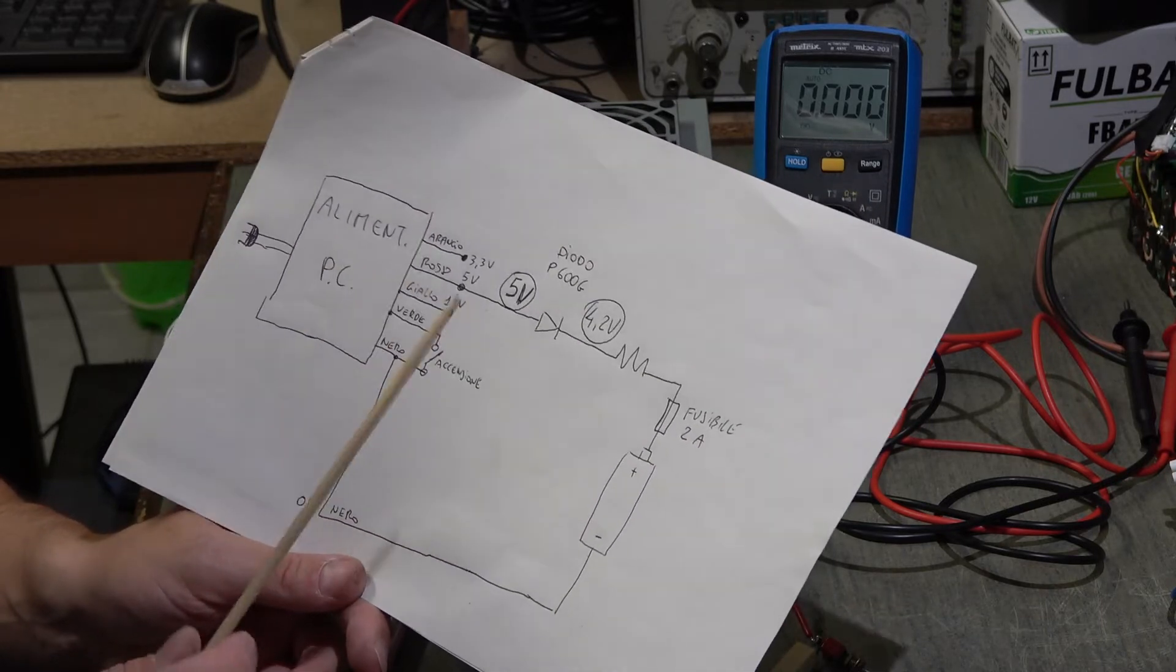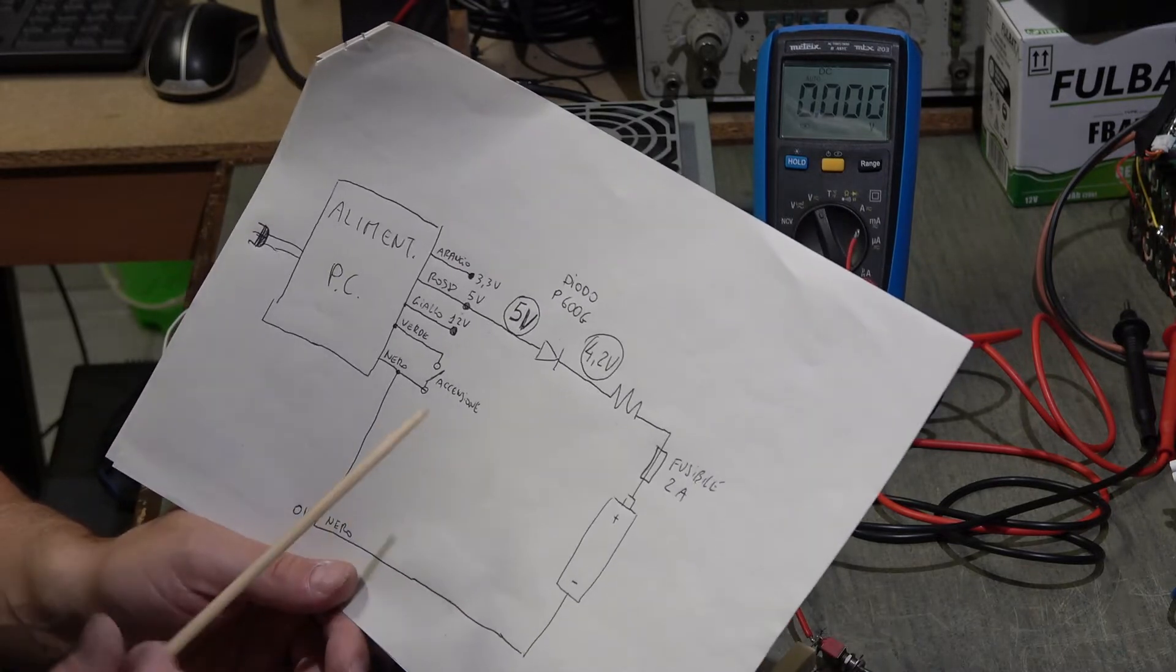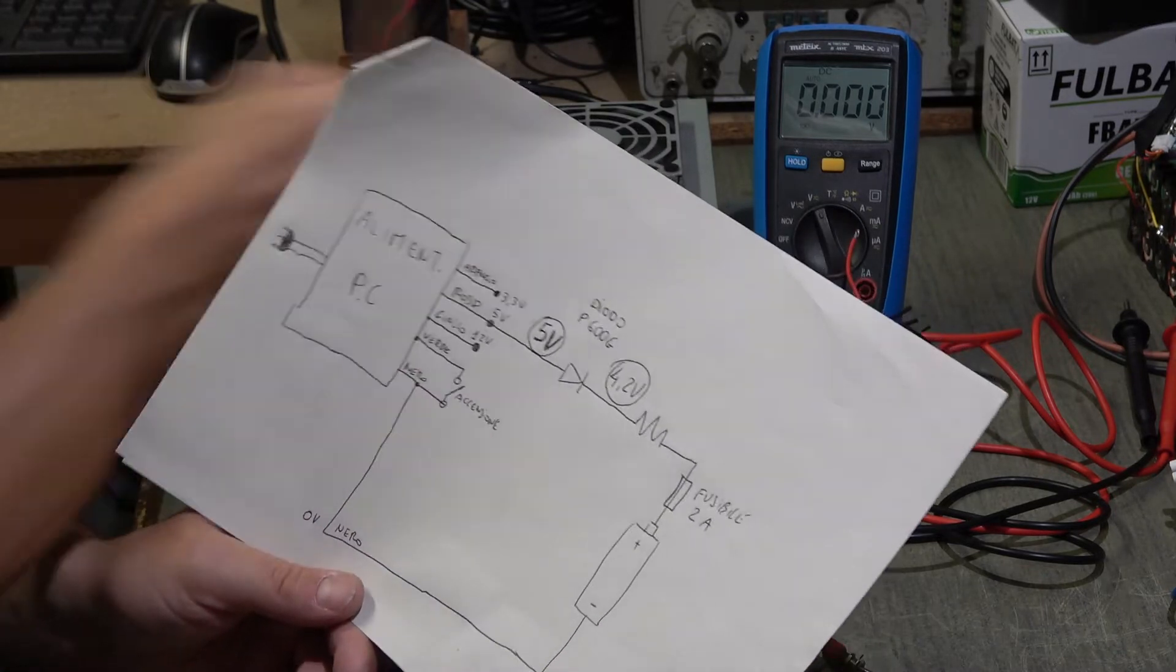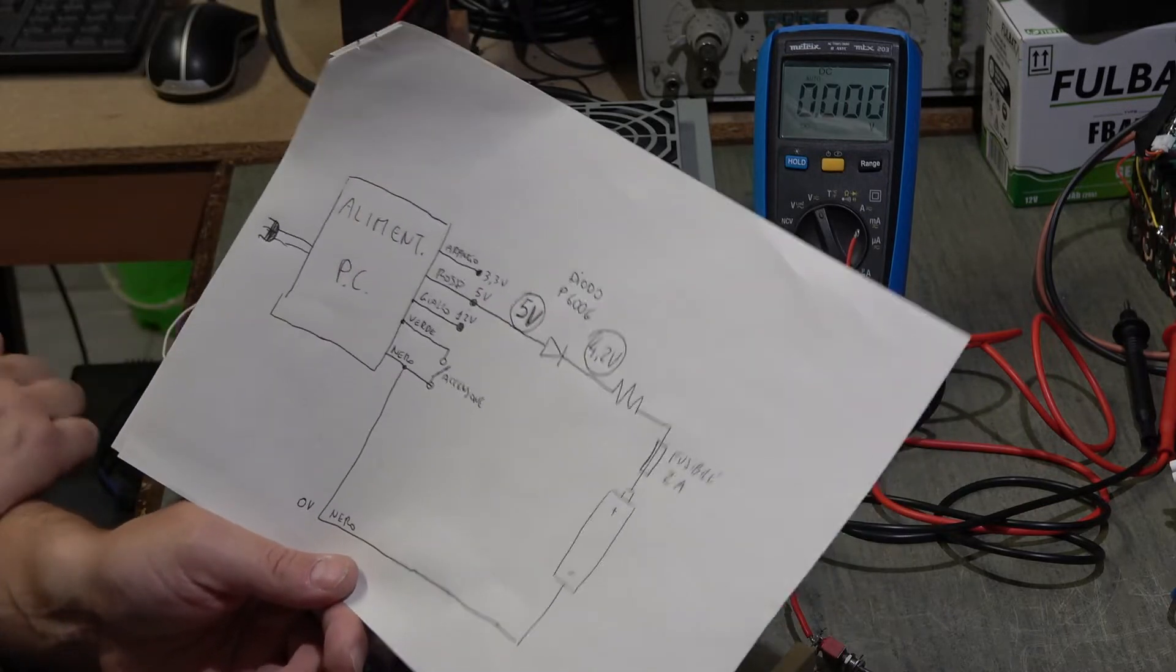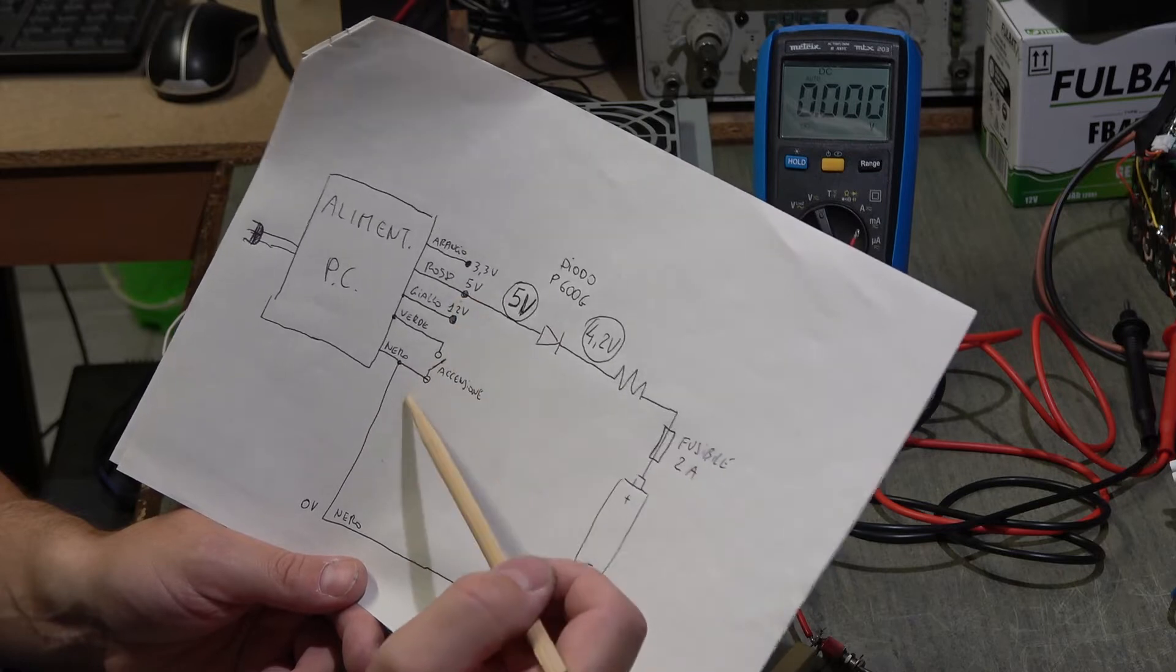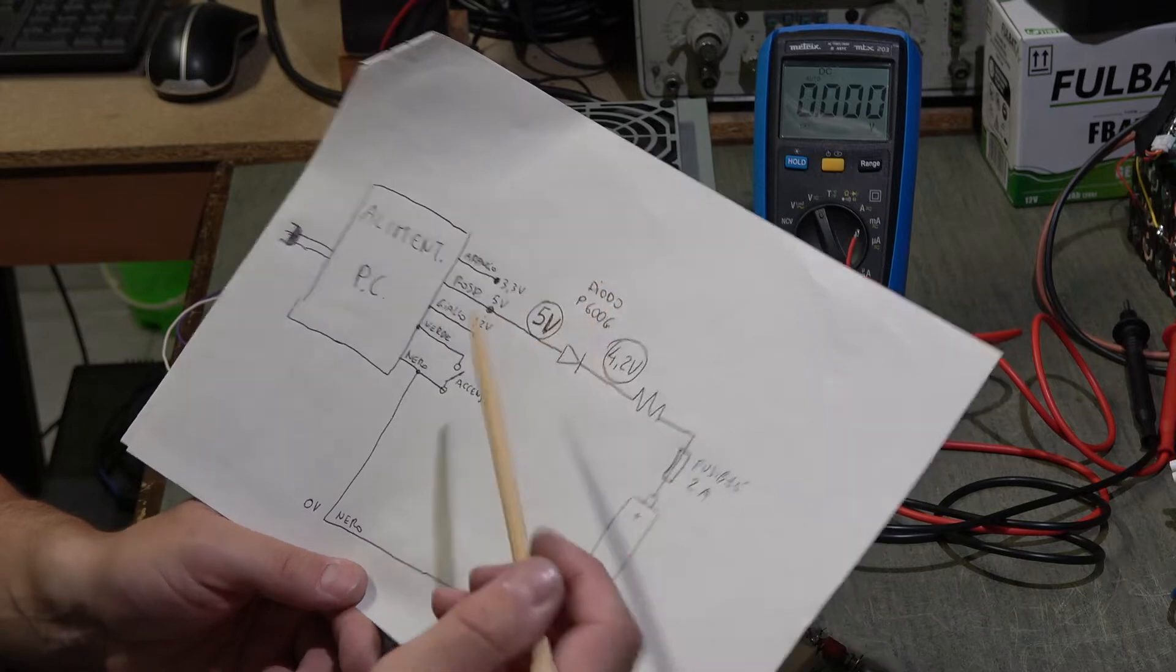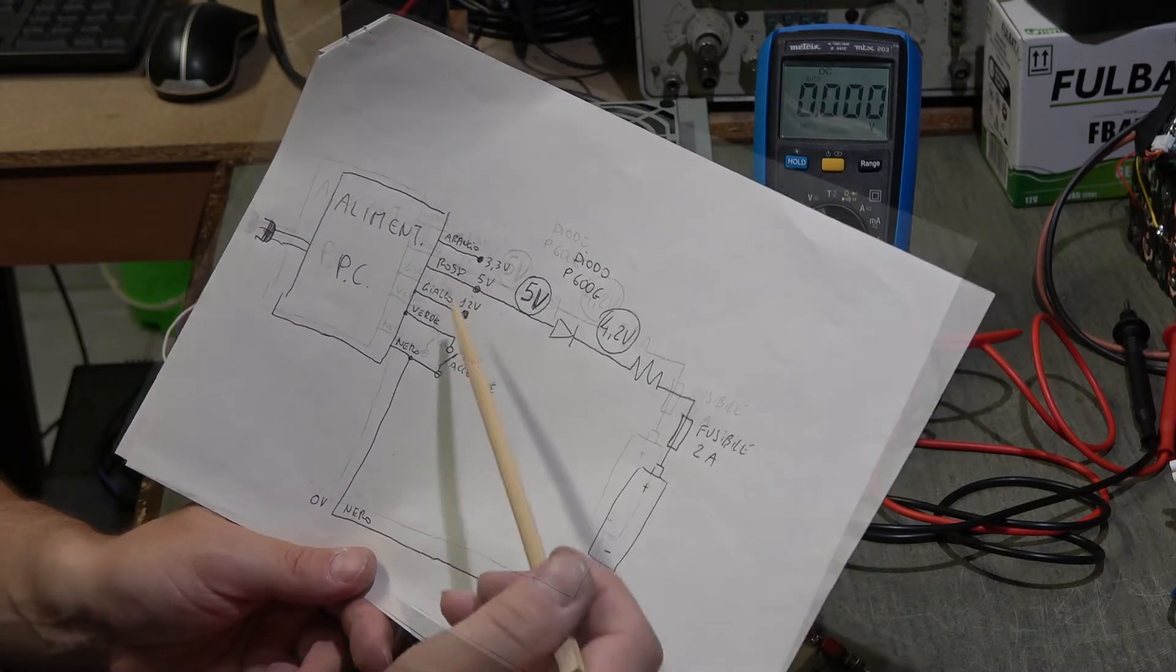Then there are other wires, other colors, for example the blue. The blue with the yellow gives 24 volts, but it has a very low current - many times half an ampere, 700 milliamperes.